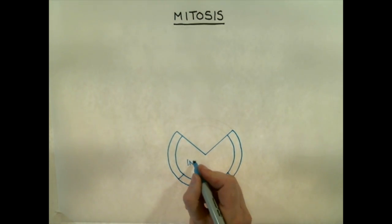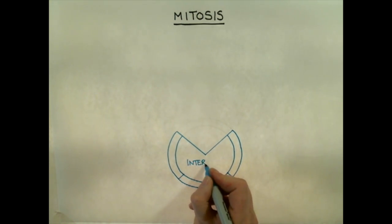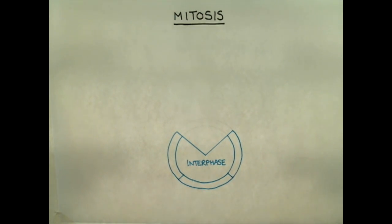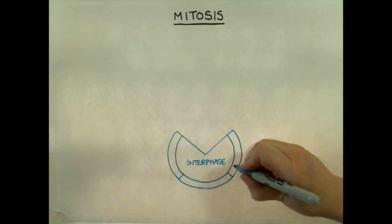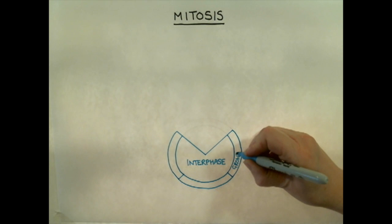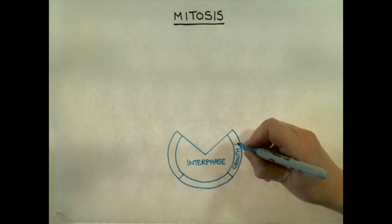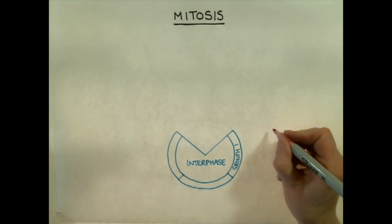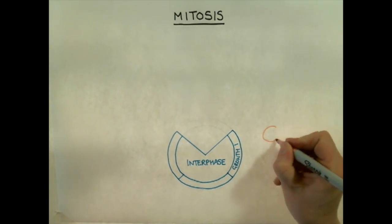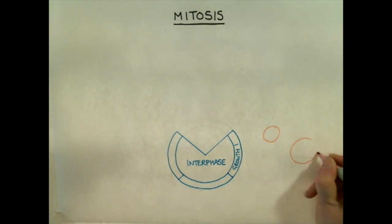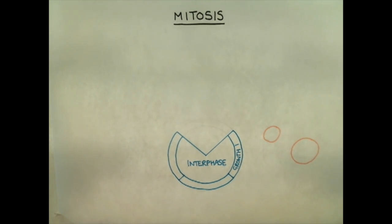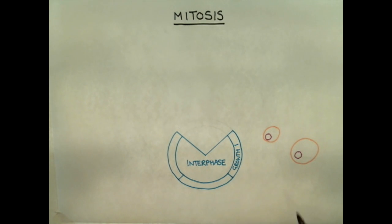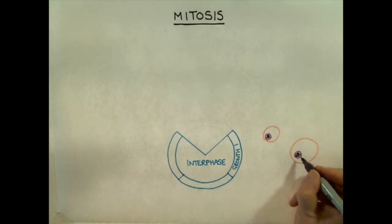The mitotic cell cycle is divided into two stages. The first, interphase, is when the cell prepares for replication, and the second is when the cell divides. The first part of interphase is called Growth 1, and this is when the cell increases the number of organelles and other cell contents, but not its DNA.